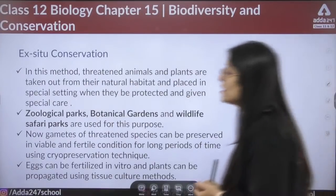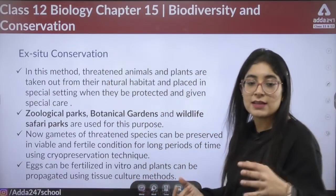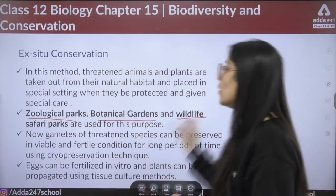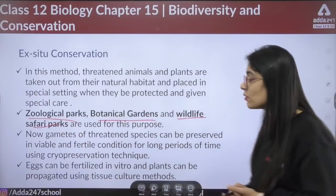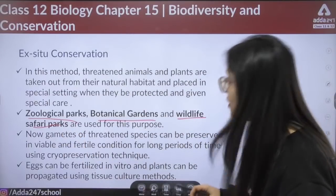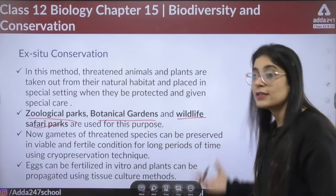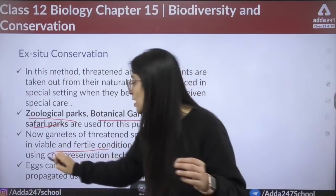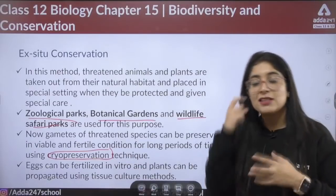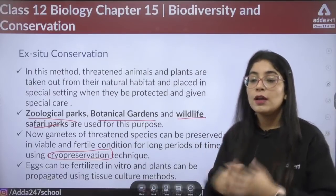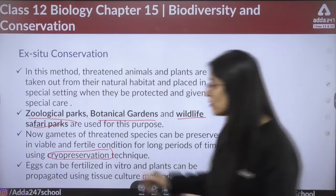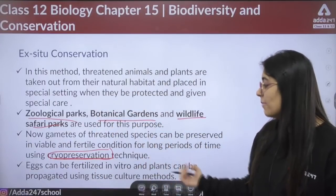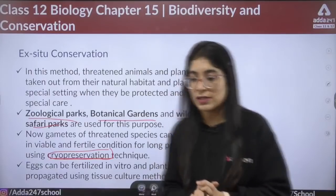Ex situ conservation is the conservation of threatened animals and plants outside their natural habitats in a special setting. Zoological parks, botanical gardens, and wildlife safari parks are used for this purpose. The gametes of threatened species are also preserved in fertile conditions for long periods — this is known as cryo-preservation. Eggs can be fertilized in vitro, and plants can be propagated using tissue culture techniques.